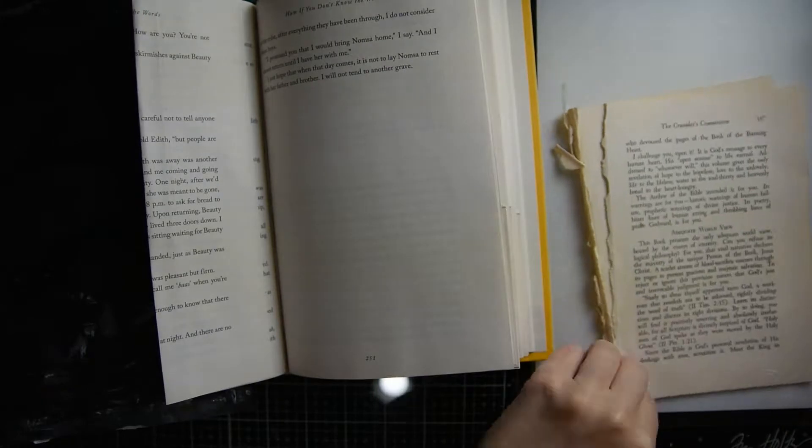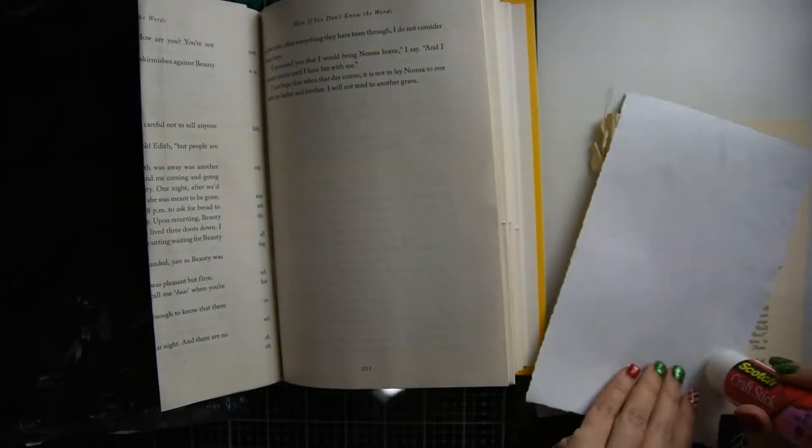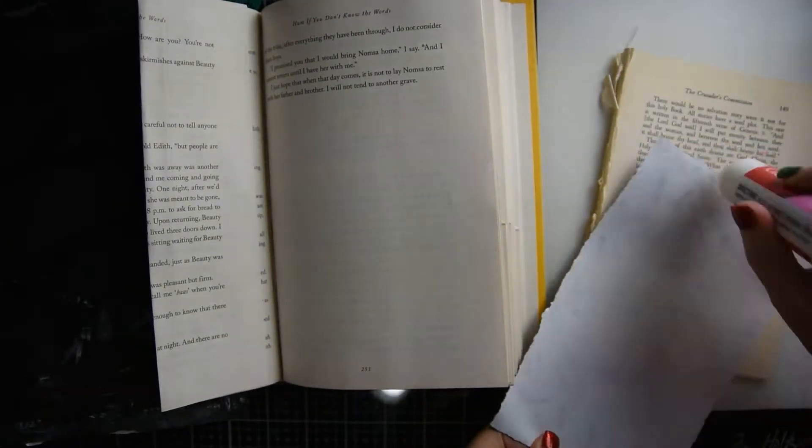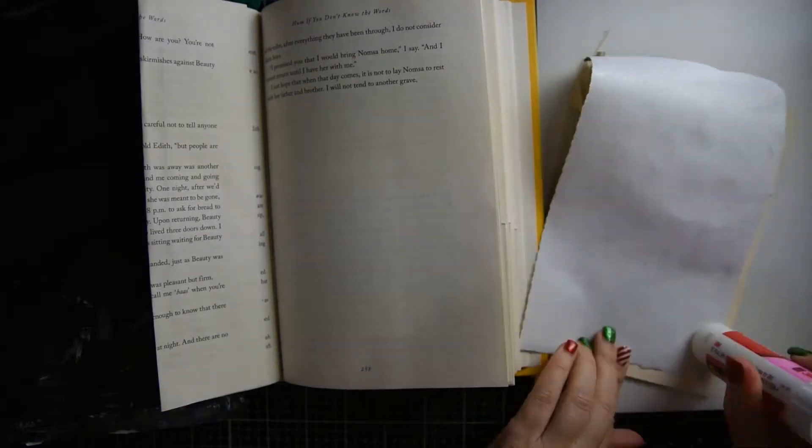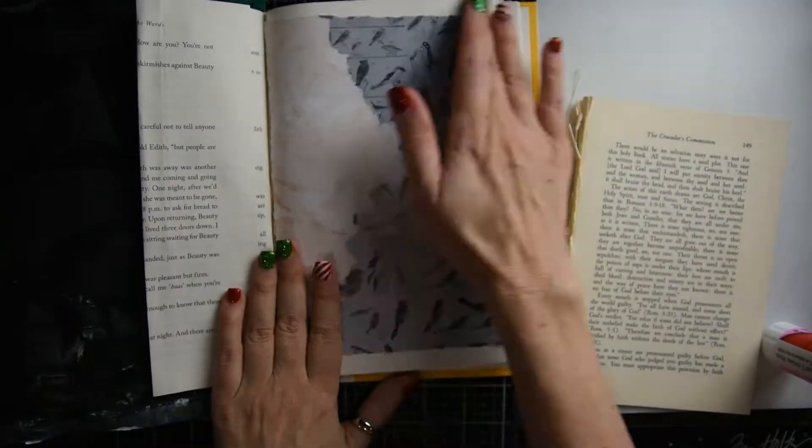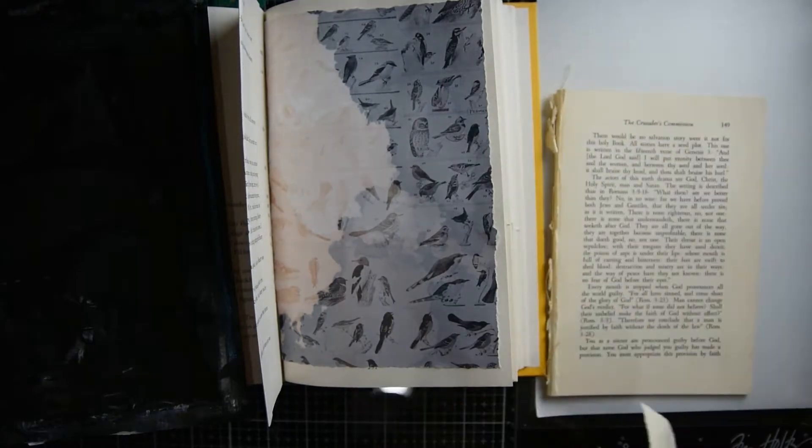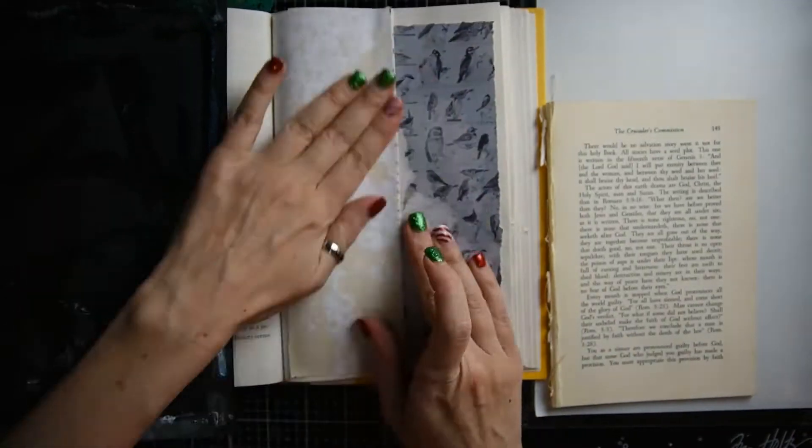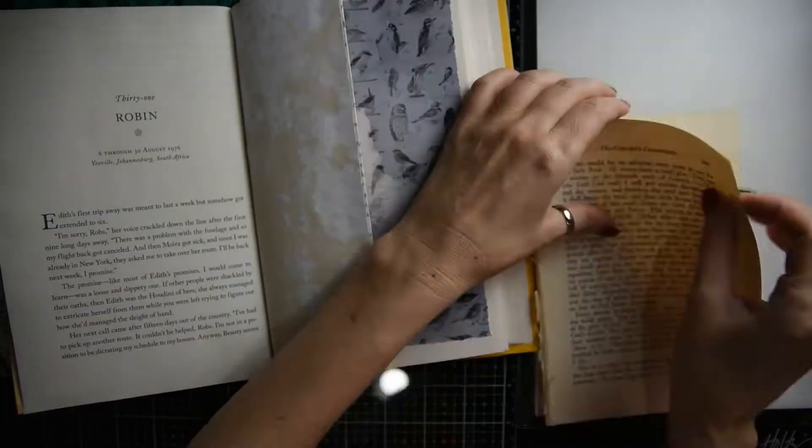So the first thing that I'm doing is I took one page and I folded half of it down and glued it. I'm putting the back papers down and then a piece of coffee dyed paper on top of my flap.